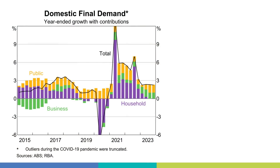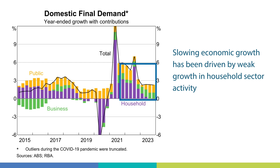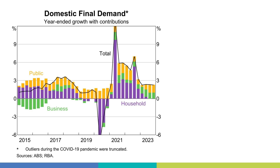So what's driven this slowdown in economic growth? The main reason is that growth in household sector activity has weakened, shown by the shrinking size of the purple bars. In contrast, business investment — the green bars — has grown strongly over the past 18 months. Public spending, the yellow bars, has also made a positive contribution to growth in domestic final demand.